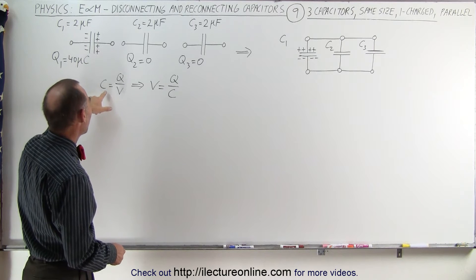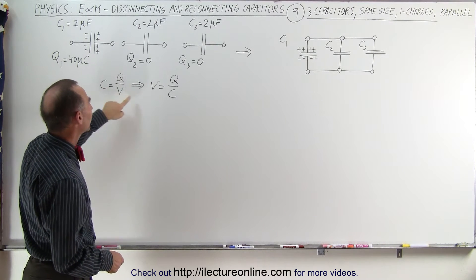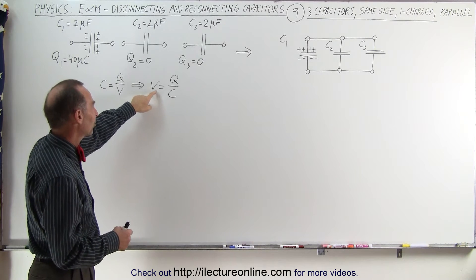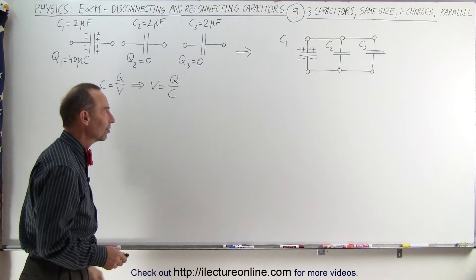Notice that the capacitance is still Q over V, which can be solved for the voltage across a capacitor being equal to the ratio of charge divided by capacitance, V equals Q over C.